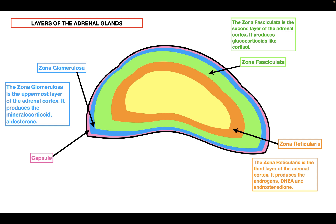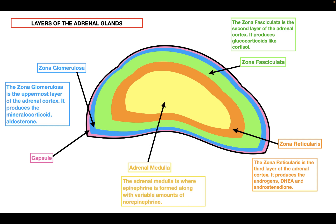The final region of the adrenal gland is the adrenal medulla. The adrenal medulla is responsible for producing epinephrine and also smaller amounts of norepinephrine. So these are all the layers of the adrenal gland.